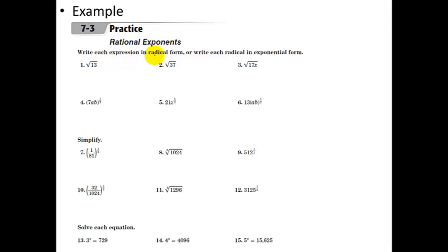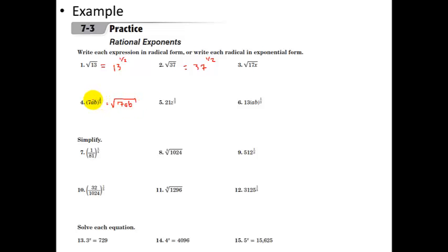Write each expression in radical form or each radical in exponential form. The square root of 13 is the same as 13 to the one-half power. The square root of 37 is 37 to the one-half power. The one-half power is the same as the square root, so everything in parentheses goes under the square root symbol. The 21 does not have an exponent so it's just a normal 21, but z has an exponent of one-half, so z is inside the radical: twenty-one times the square root of z, or twenty-one times z to the one-half.